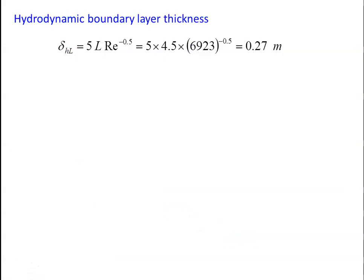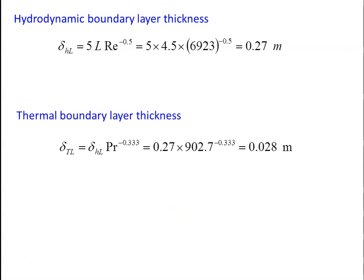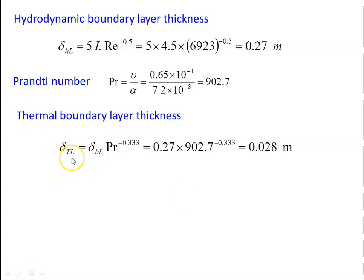Hydrodynamic boundary layer thickness: δHL = 5·L·Re⁻⁰·⁵ = 5 × 4.5 × (6923)⁻⁰·⁵ = 0.27 m. Prandtl number = ν / α = (0.65 × 10⁻⁴) / (7.2 × 10⁻⁸) = 902.7. Thermal boundary layer thickness: δTL = δHL × Pr⁻⁰·³³³ = 0.27 × (902.7)⁻⁰·³³³ = 0.028 m. For oil with high Prandtl number, thermal boundary layer is much thinner than hydrodynamic.